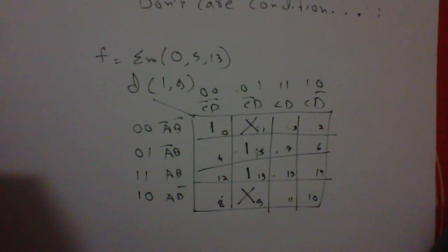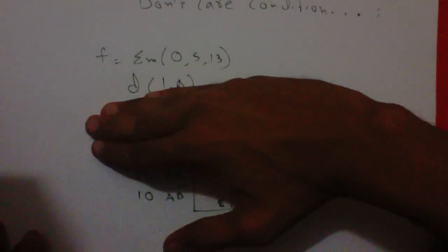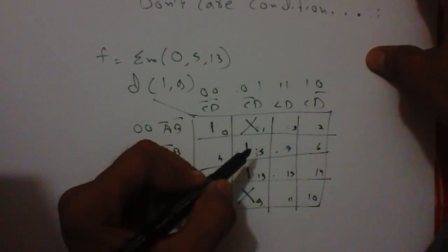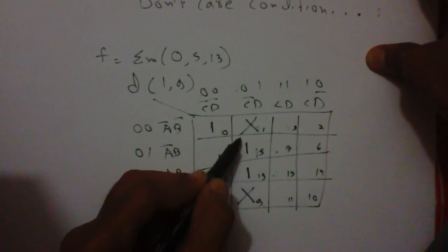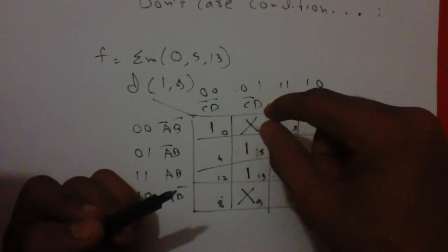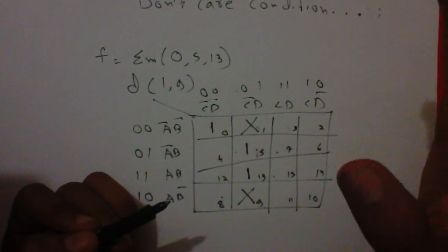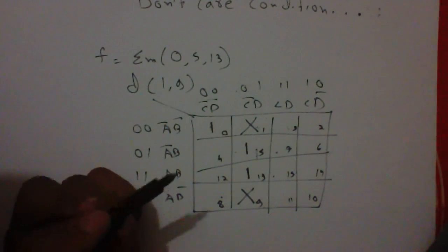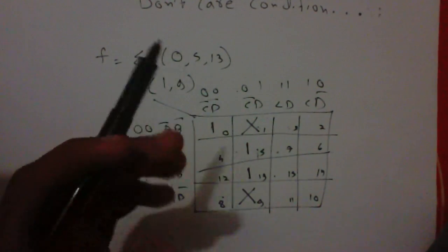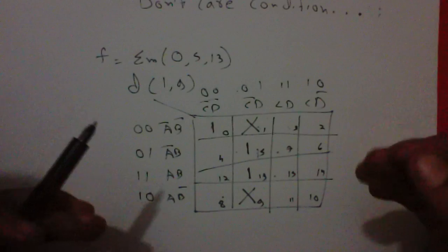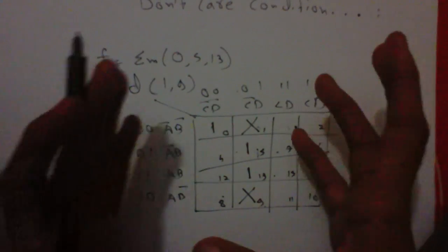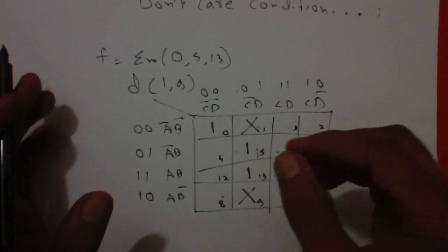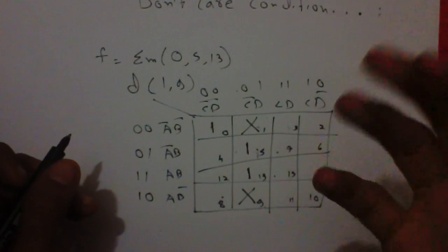If there are no don't care condition in this, we will simply create group of these two ones. But here are don't care conditions, so the use and advantage of don't care condition is we can simply add them to create our group as big as we can. The bigger group, the less equation.